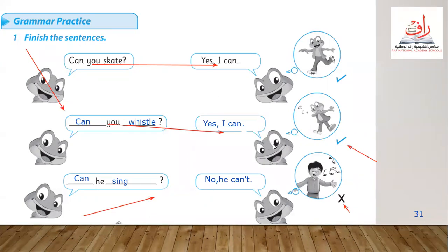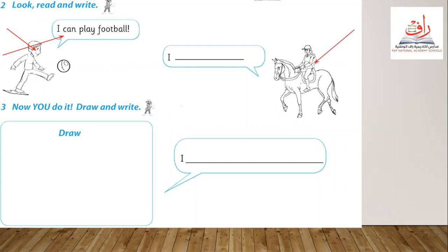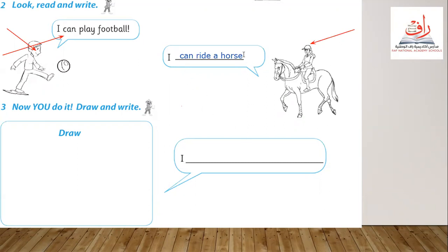Well done — this is about question number one, done. Let's go to question number two: look, read and write. I can play football — let's read this. Number one: we can see this boy play football, so he says 'I can play football.' Let's go to this girl — what is she doing? She is riding a horse. So: I can ride a horse, with a full stop.